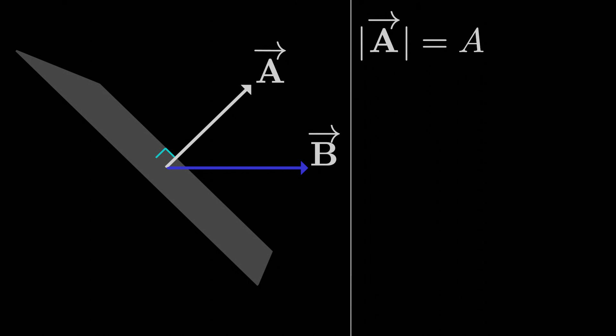Then the magnetic flux through this area, phi, is defined as B dot A, or the magnetic field vector dotted with the area vector.